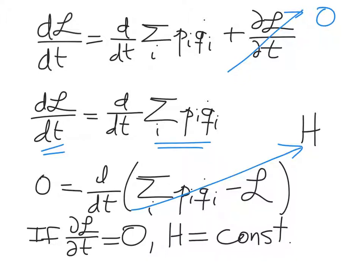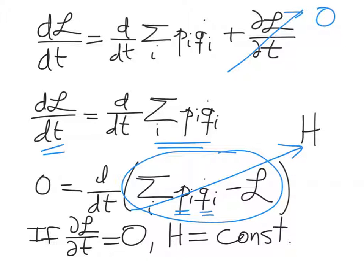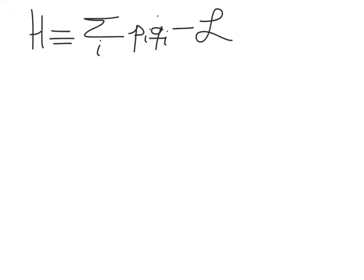In other words, the generalized momenta and velocities will together evolve in such a way as to conserve this expression. For many physical systems, the Hamiltonian works out to be the total energy of the system. The conservation of the Hamiltonian with time just expresses the conservation of energy. However, it's important to keep in mind that the Hamiltonian is defined in this way, and it doesn't always work out to be the total energy — there are certain interesting systems where it doesn't actually represent the total energy.